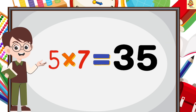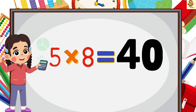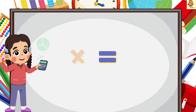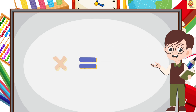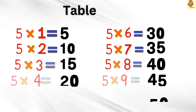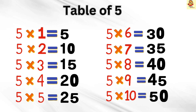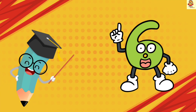5 7's are 35, 5 8's are 40, 5 9's are 45, 5 10's are 50.